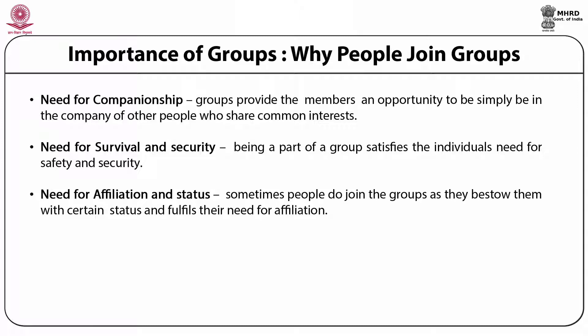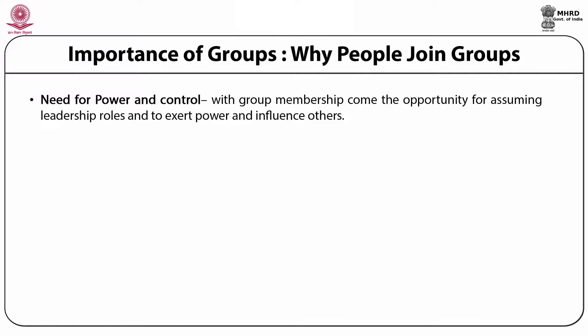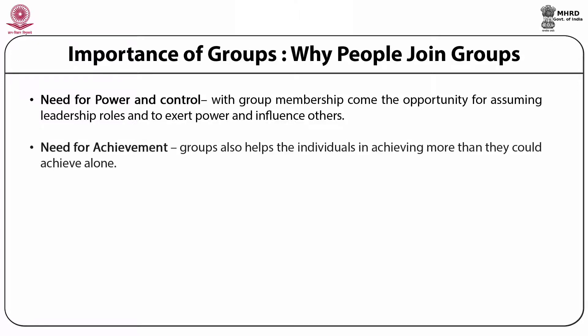Sometimes individuals have a higher need for power and controlling others, and they become a part of a group where they have an opportunity for assuming leadership roles. This gives them an opportunity to exert a certain amount of power and influence over others, satisfying their need for power and control. Then there could be individuals who are very high on achievement, and these groups help them in achieving more than they could have achieved alone or individually.